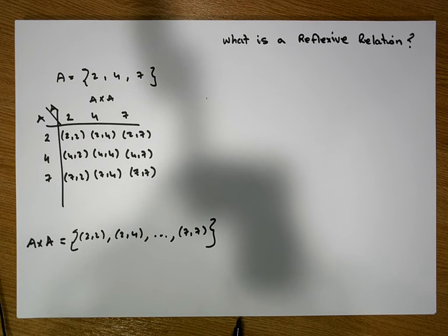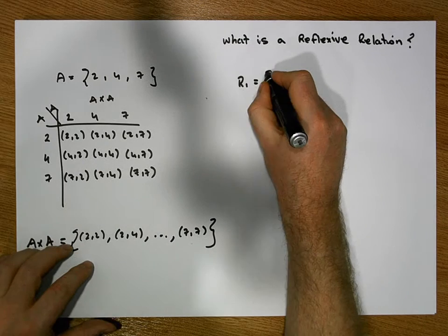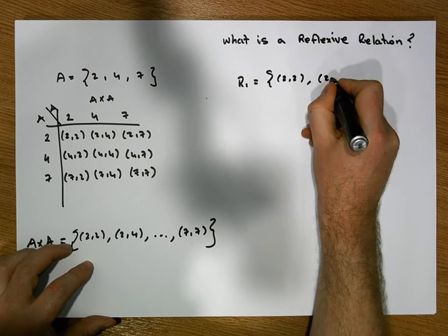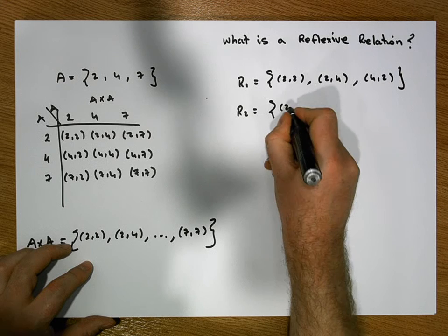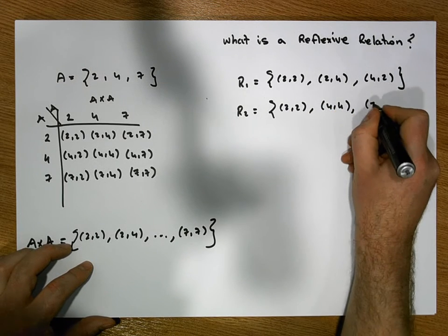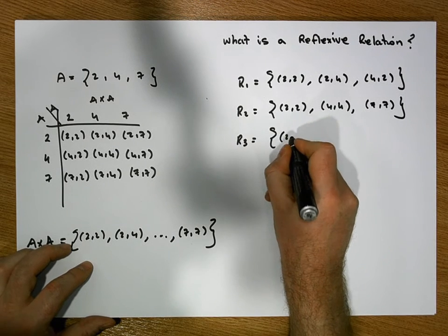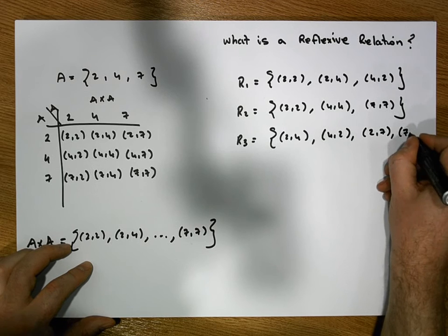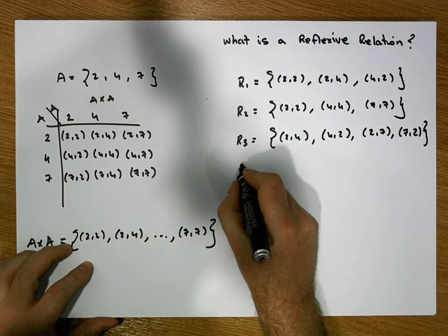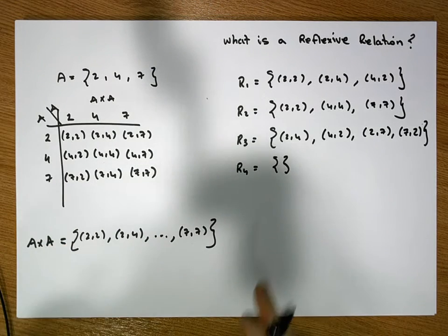We defined a relation to be a subset of this cross product. For example, r1 could equal {(2,2), (2,4), (4,2)}; r2 was equal to {(2,2), (4,4), (7,7)}; r3 was equal to {(2,4), (4,4), (2,2), (7,2)}; and r4 was the empty set, which is also a valid relation since the empty set is a subset of all sets.